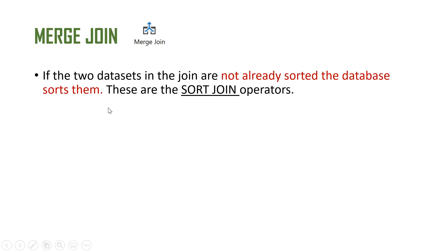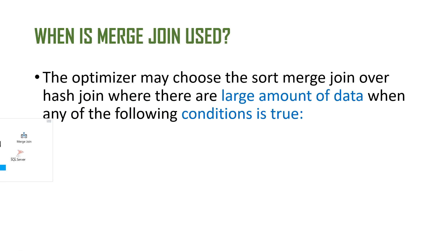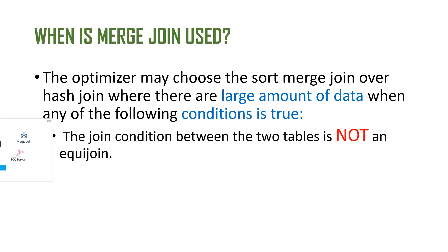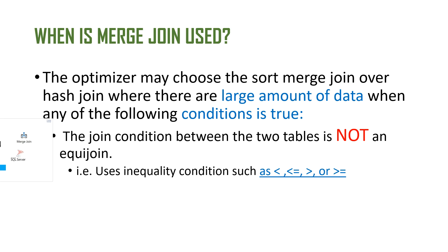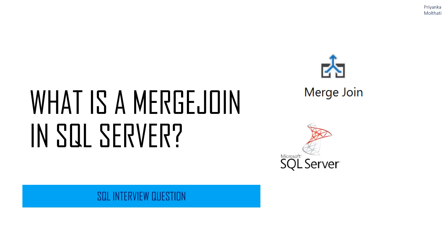To summarize the highlights: if the two data sets are not already sorted, the database sorts them using the sort operator. For each row in the first data set, the database probes the second data set for matching rows and joins them, basing its position on the match made in the previous iteration. The merge join is used when there is a large amount of data, the join condition is non-equi, or the data is already sorted and the optimizer finds it cheaper to use a sort merge join.